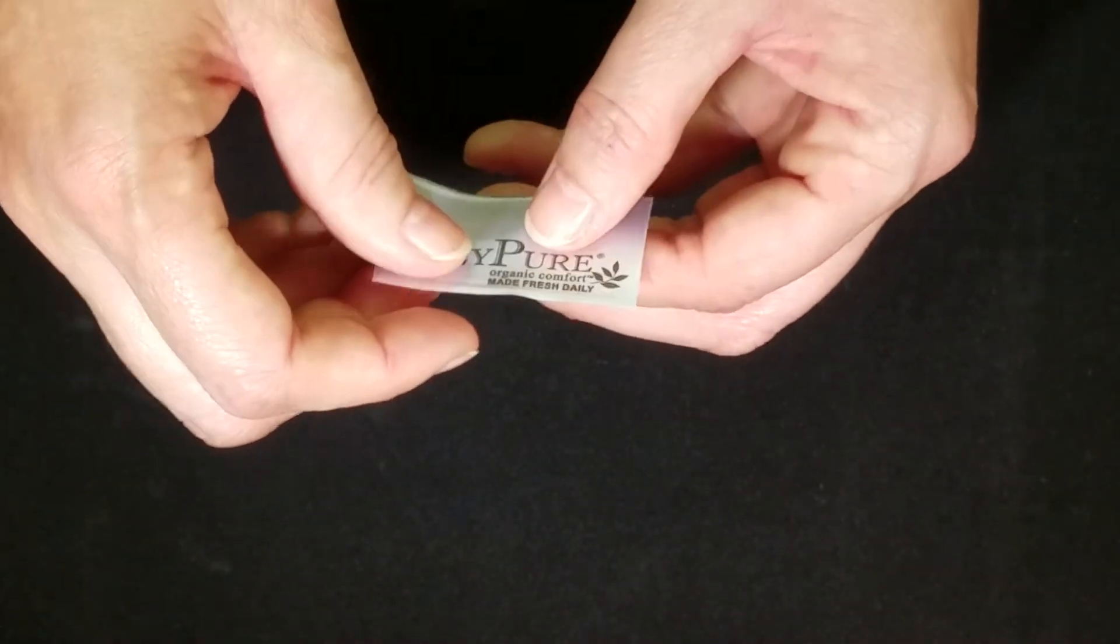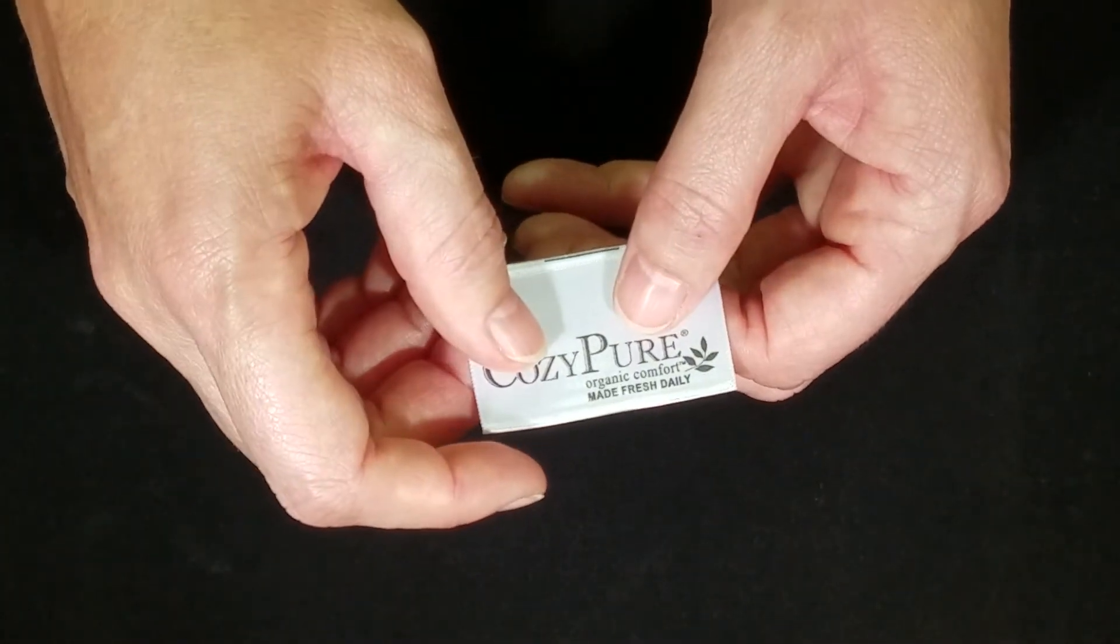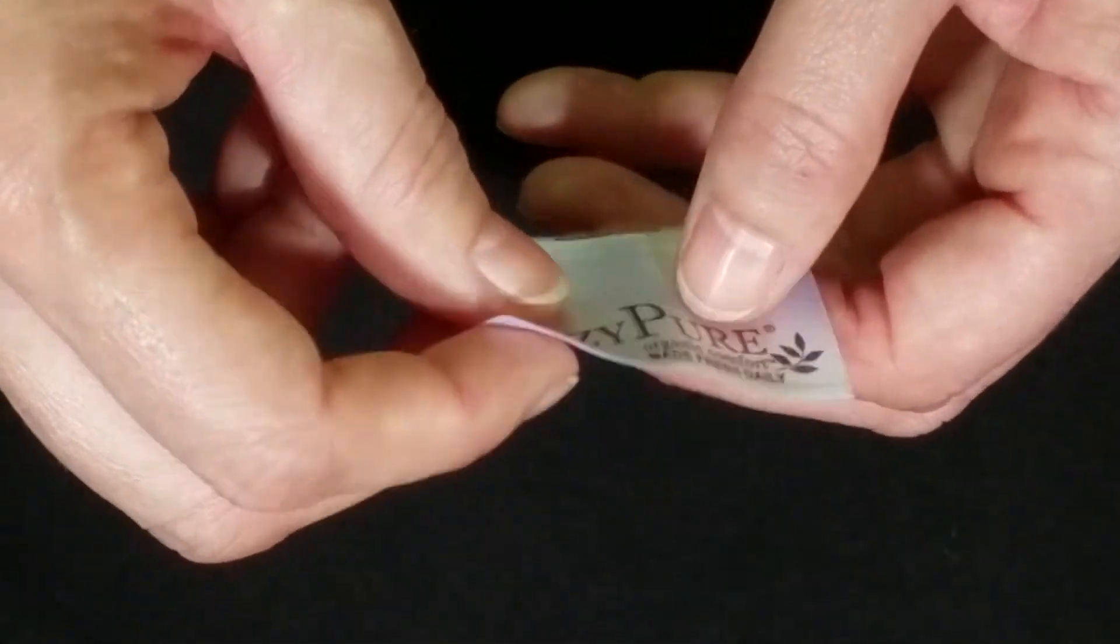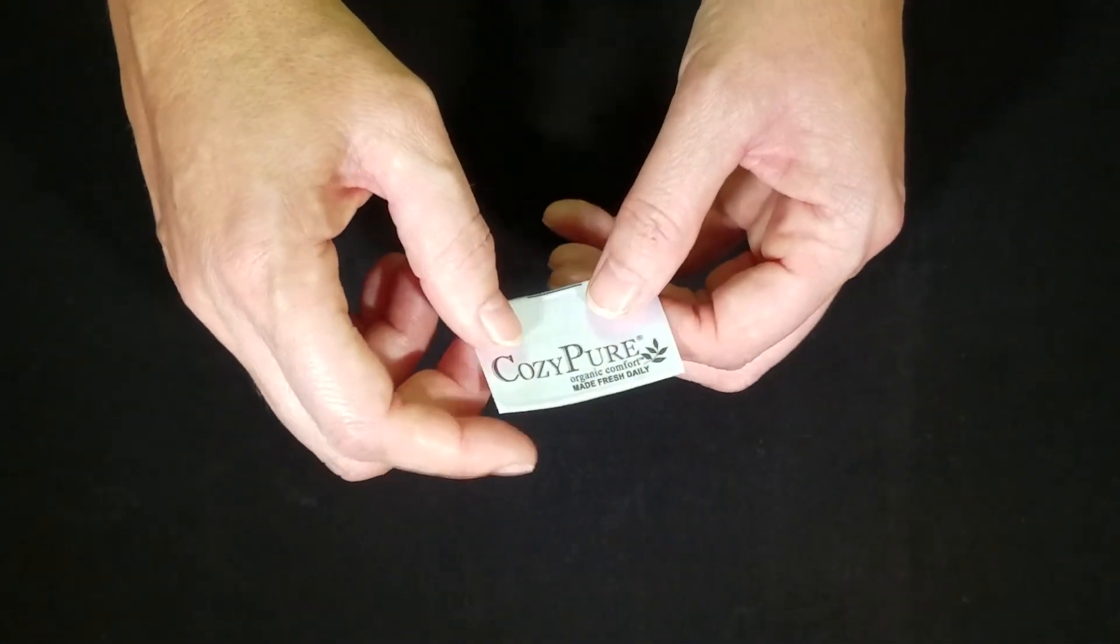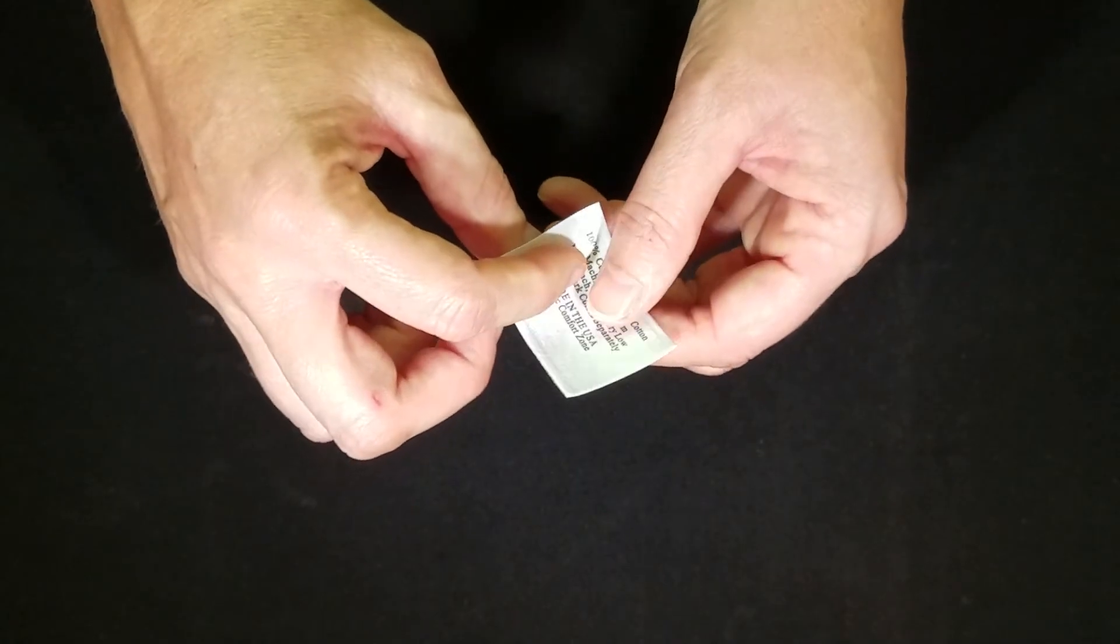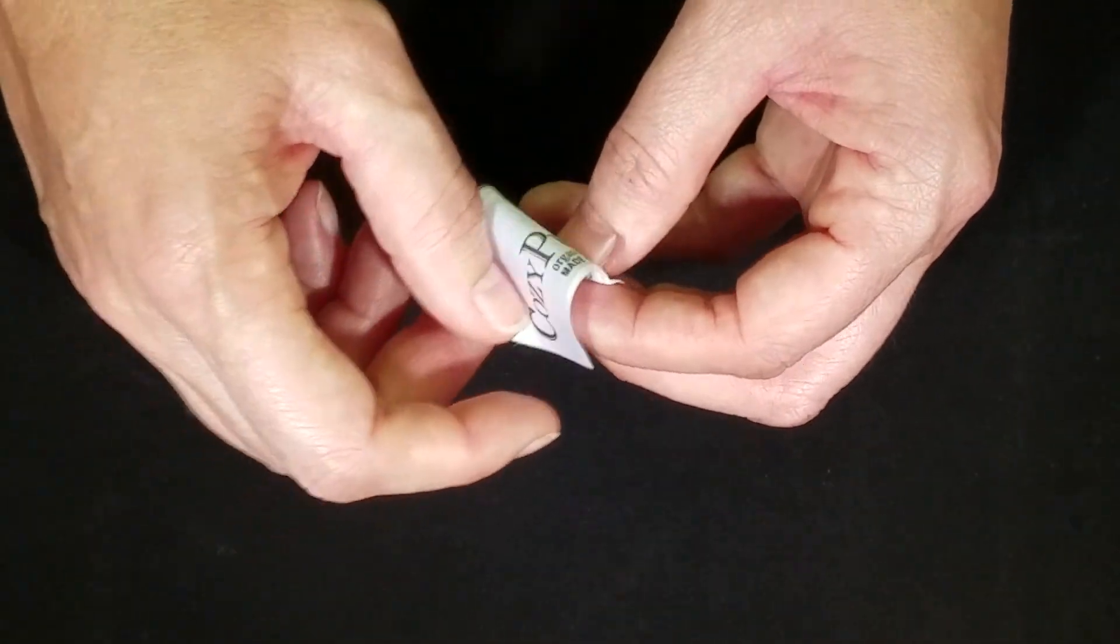And the third type is called double faced woven edge satin. This material has a shiny appearance on both sides and it's commonly used when you need to print on both sides of the label. It's the softest of all three types as well.